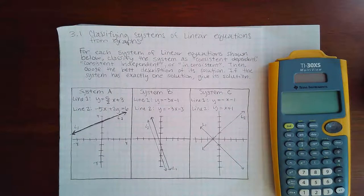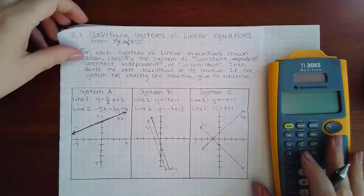Here we have 3.1, classifying systems of linear equations from graphs. Each system of linear equations shown below is classified as consistent dependent, consistent independent, or inconsistent. Then choose the best description of its solutions. If the system has exactly one solution, give its solution. So there's two things that they're going to ask you for in this topic.